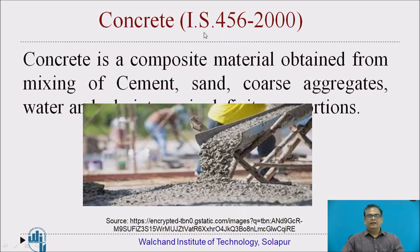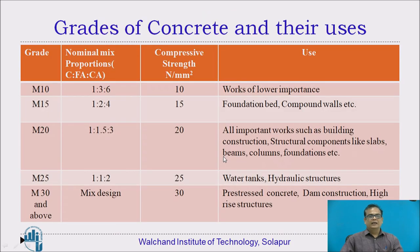Now let us see concrete. As per IS 456-2000, the specifications are there. Concrete is a composite material obtained from mixing of cement, sand, coarse aggregate, and water in definite proportions. Grades of concrete are like M10 and M15, in which M stands for mix and the number stands for the characteristic compressive strength after 28 days of curing in N per mm². M10 has nominal mix proportions of 1:3:6 and a compressive strength of 10 N per mm². M15 has proportions of 1:2:4 and strength of 15 N per mm². Both are used for works of lower importance.